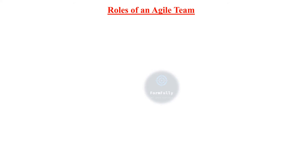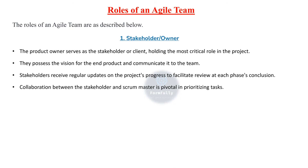We have covered roles based on project hierarchy. Now we will see the roles of an Agile team. The first one is stakeholder or owner. The product owner serves as stakeholder or client, holding the most critical role in the project. They possess the vision for the end product and communicate it to the team. Stakeholders receive regular updates on the project's progress to facilitate review at each phase conclusion.